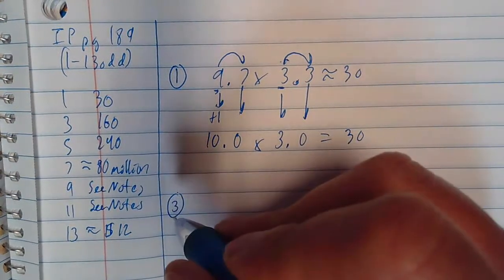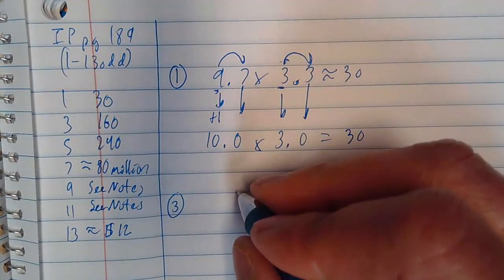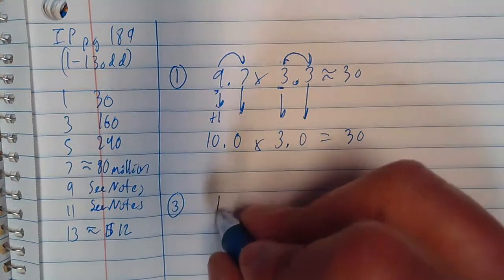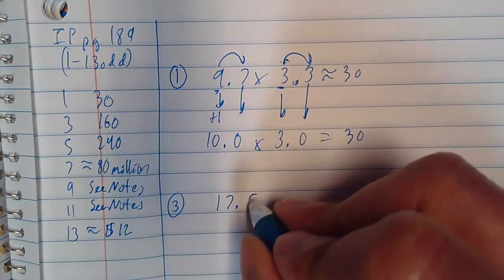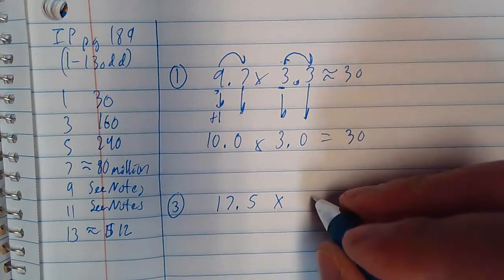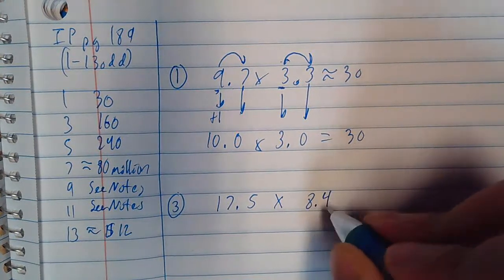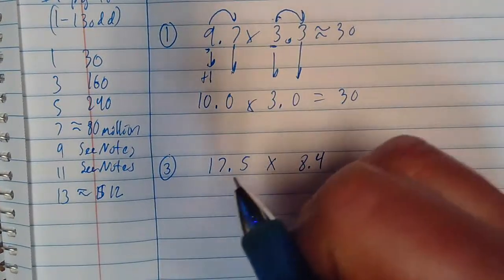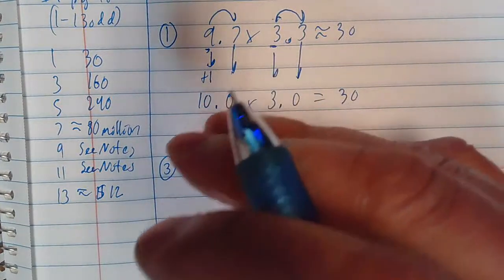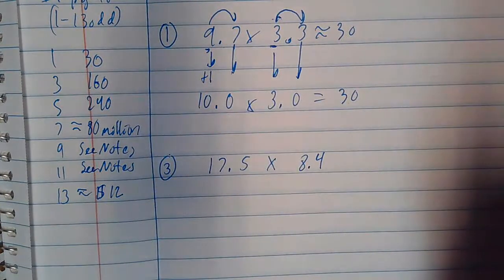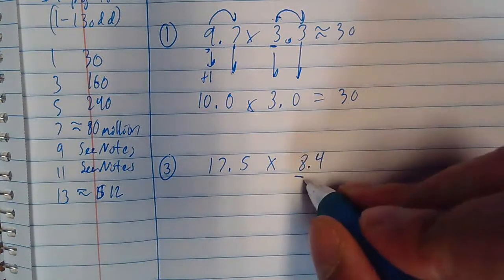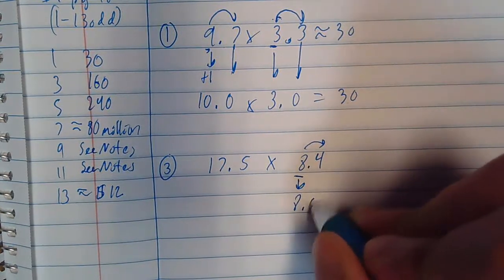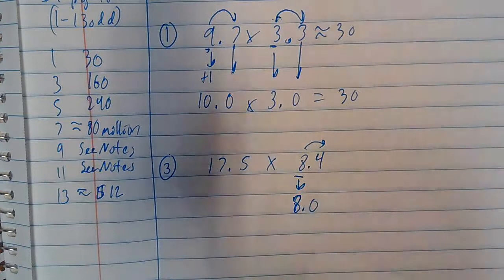Number three: 17.5 times 8.4. The reminder here is to do the math or set up the problem so that it's easy to do in your head. I'm looking at the ones place — that's four or less, which means this stays the same.